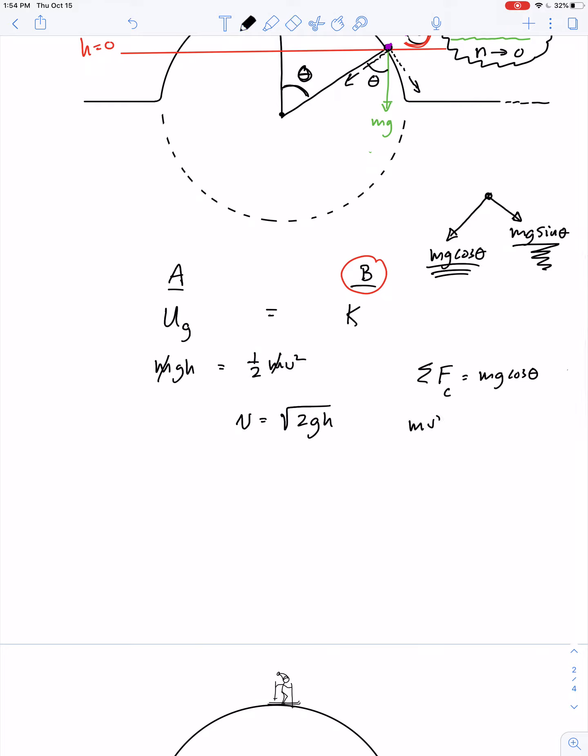Centripetal force is mv squared over r. Mass appears on both sides of the equation. So v squared over r is equal to g cosine theta, but we know what v is at that point based on the law of conservation of energy. So if v is the square root of 2gh, v squared is 2gh. 2gh over r equals g cosine theta.